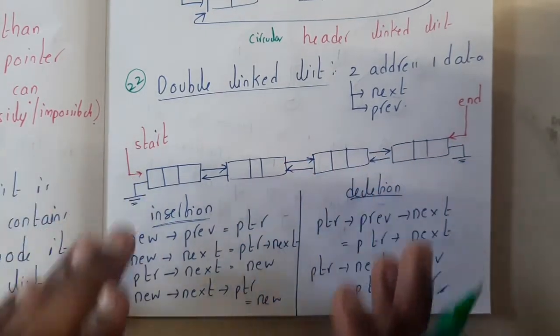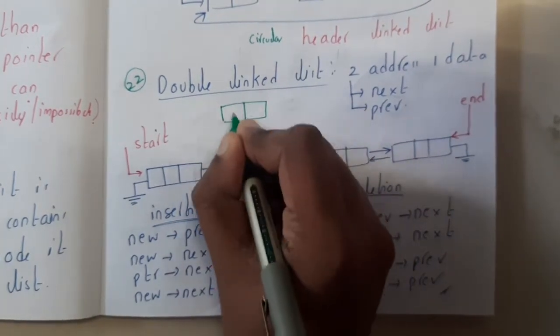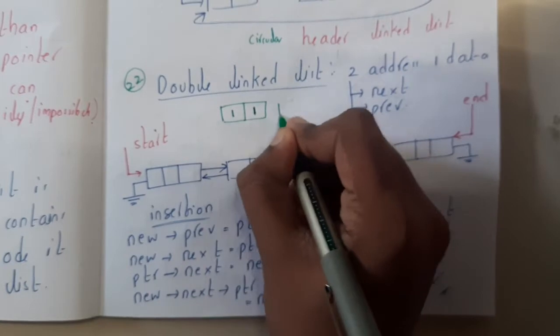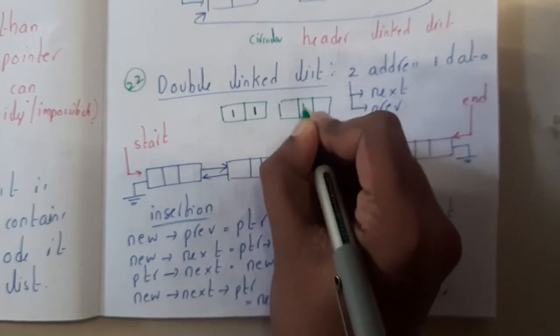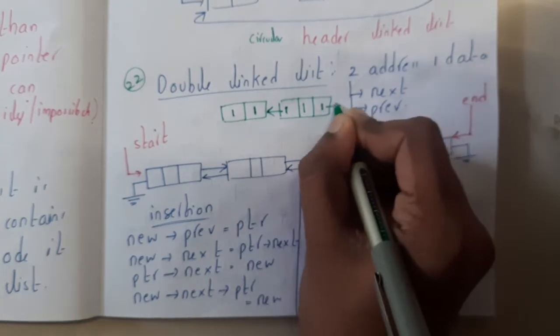In a normal linked list, we have one data and one pointer, whereas in doubly linked list we have one data and two pointers. So one pointing backwards and one pointing forwards. This concept is nothing but doubly linked list.